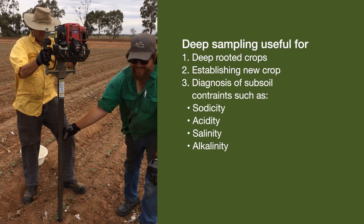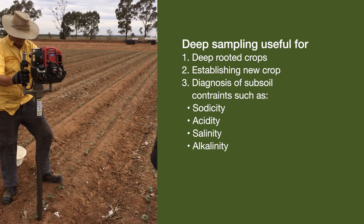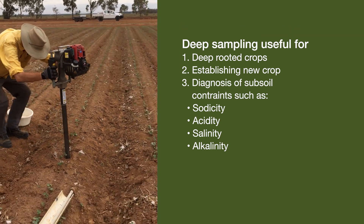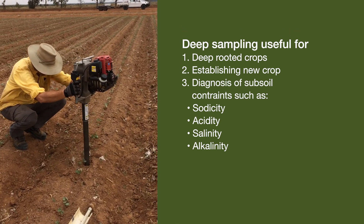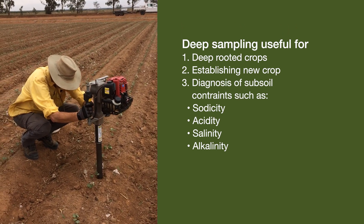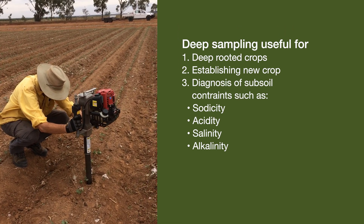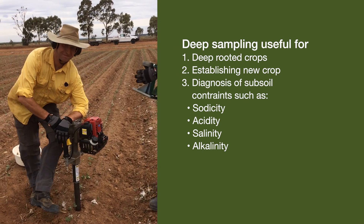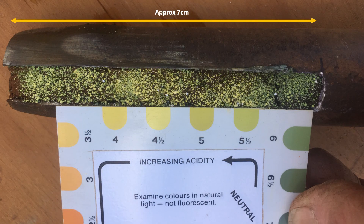Deep or subsurface sampling is useful when establishing a new crop, or when you have deep rooted crops such as trees, lucerne or wheat. Deeper sampling should also be considered when diagnosing a soil issue, such as subsurface salinity, sodicity, alkalinity, acidity and some nutrient deficiencies. Recently, research has uncovered pronounced stratification in relation to soil properties, especially pH and phosphorus. Some farming practices, such as reduced tillage or banding of fertilizer or amendments, can result in thin layers with distinct properties down the soil profile.